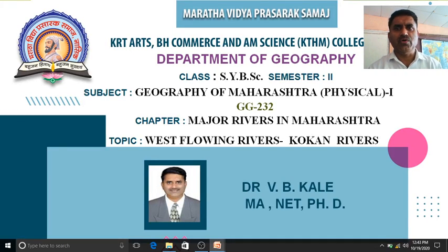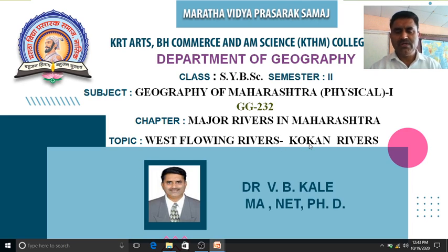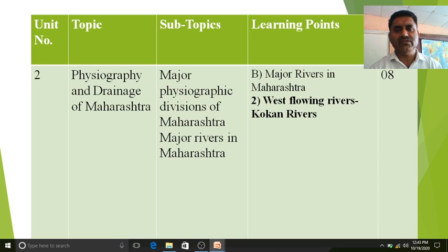Good morning students. Today we are going to see the major rivers in Maharashtra, and the last point of this chapter is west flowing rivers, particularly Kokan rivers. We have already covered Tapi and Purna rivers among the west flowing rivers, but most of the rivers which flow from east to west are particularly the Kokan rivers.